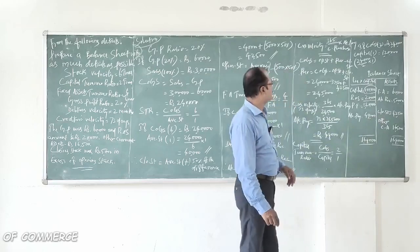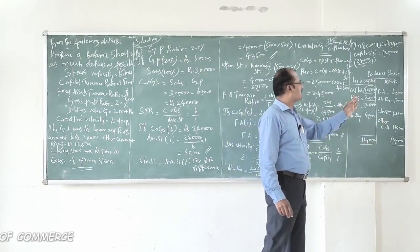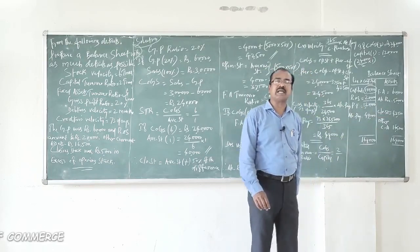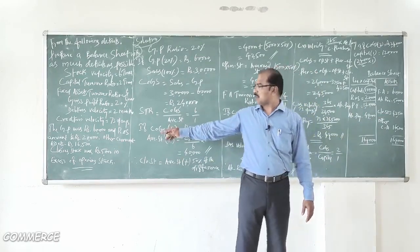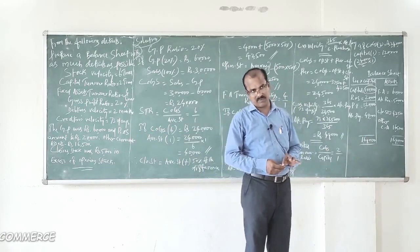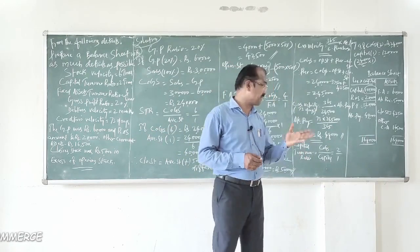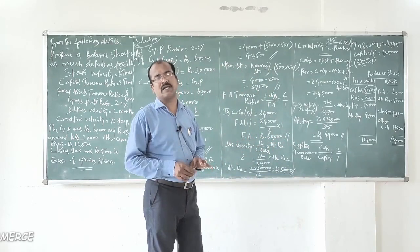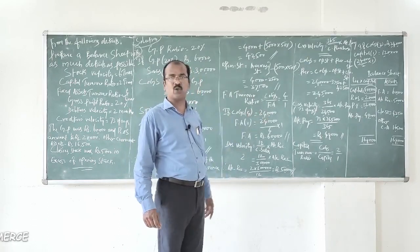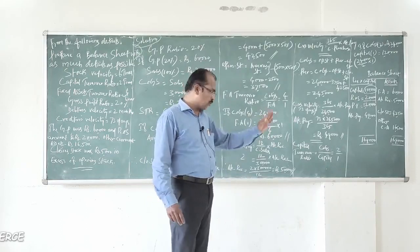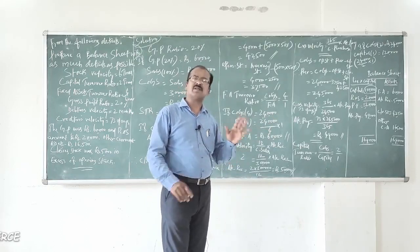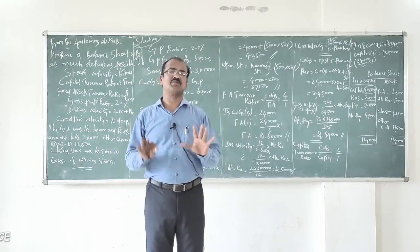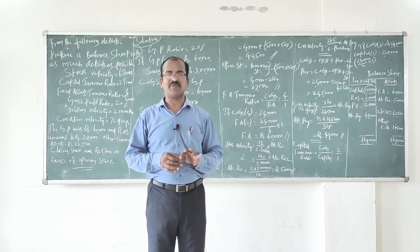Assets side: Fixed Assets = 60,000; Accounts Receivable = 50,000; Closing Stock = 42,500; Other Current Assets = 16,500. No other asset items are available. The balance sheet tallies at 1,69,000 on both sides. This is a very interesting problem — I suggest you watch this video as many times as needed to understand the concept thoroughly. Thanks for watching — I'll meet you in another video, bye for now.